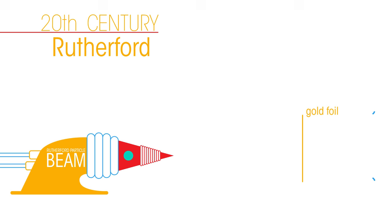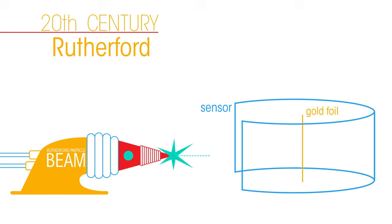They aimed a beam of alpha particles at very thin gold foil. If the alpha particles got through the foil, it would be detected by a sensor. Assuming Thompson's plum pudding model was correct, they expected all alpha particles would pass through the gold foil and be detected on the other side.